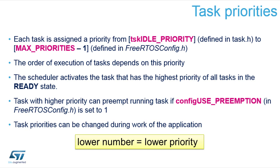The task priorities are defined as a number from zero to the max priorities minus one. The execution of each task is dependent on the priority. Remember that the number of priorities also defines the number of lists in the ready state. So the more priorities you define, the more memory it will request — which means limit the number of priorities only to the needed ones. The priority can be changed at runtime.